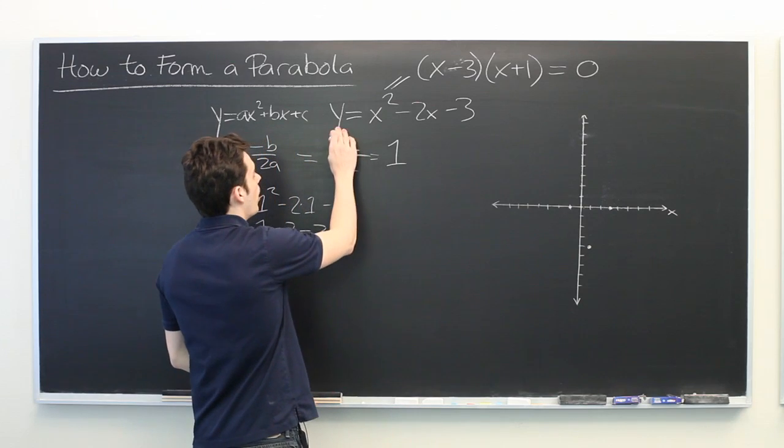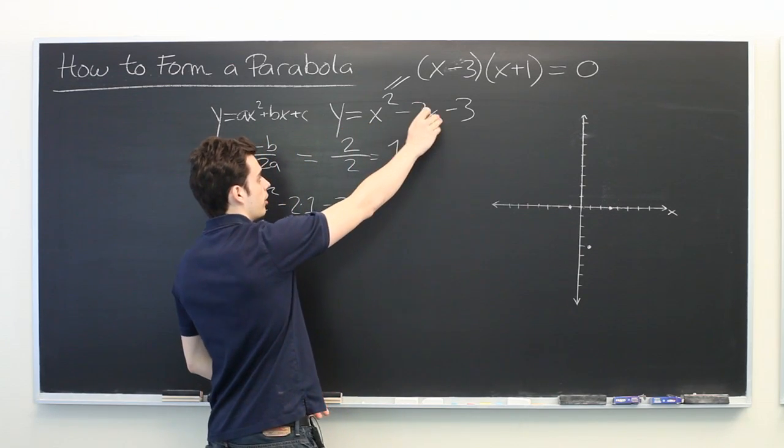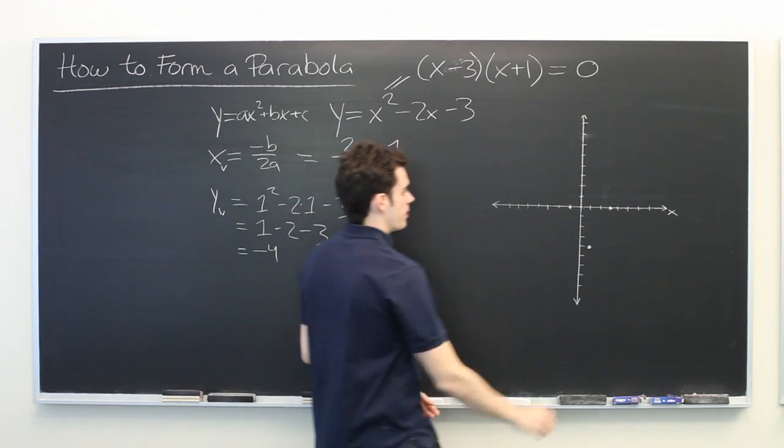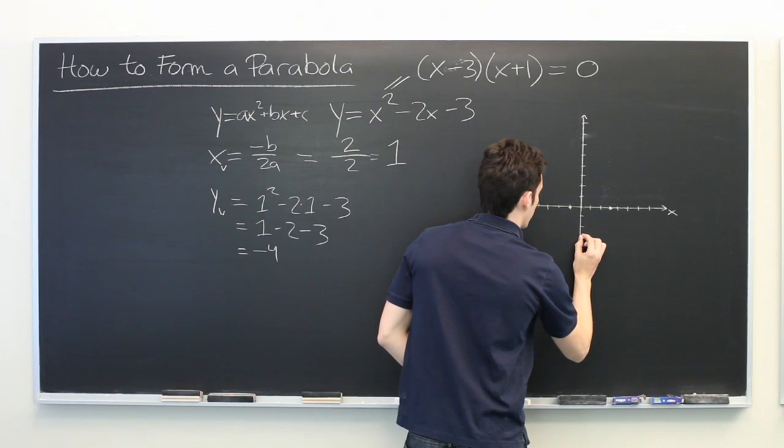At x equals 0, we have y equals 0 minus 0 minus 3. So we have 0, minus 3.